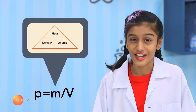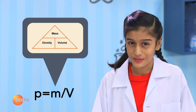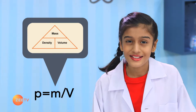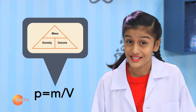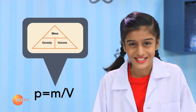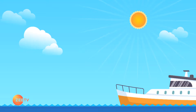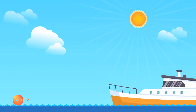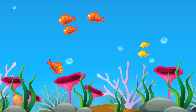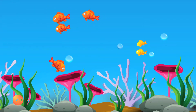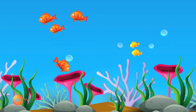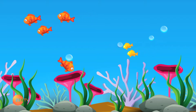Density is the characteristic property of a substance. Objects that have the same volume but different mass have different density. For example, like how ships float in the sea, corals will sink. And that's why we have beautiful corals underwater.